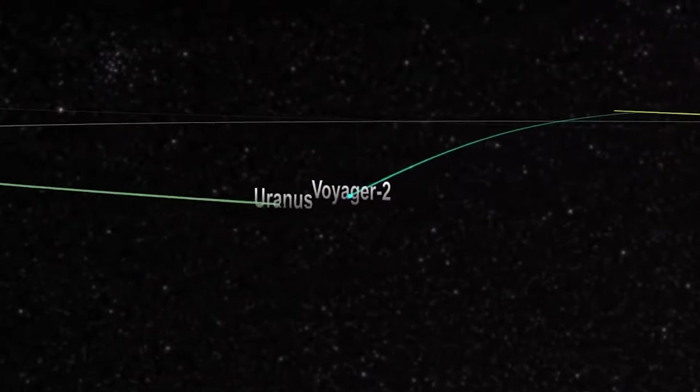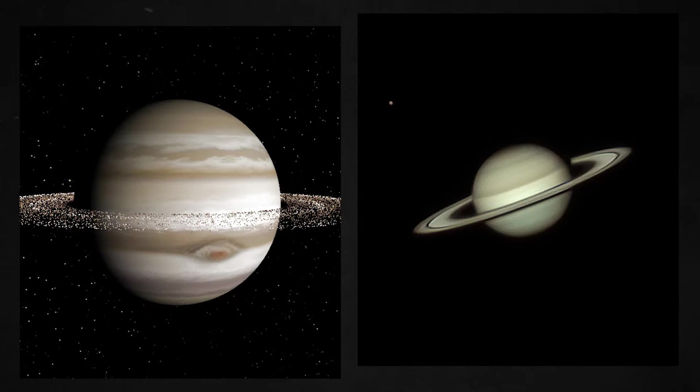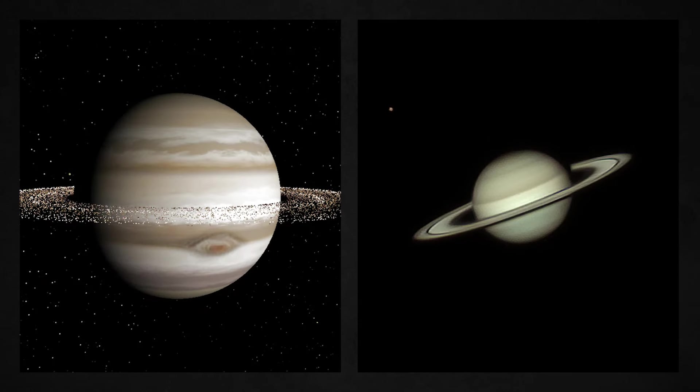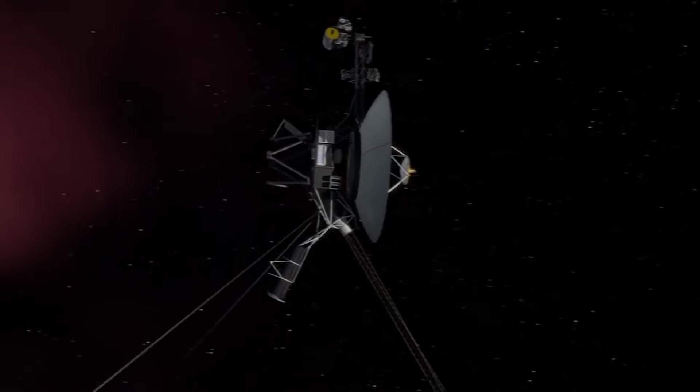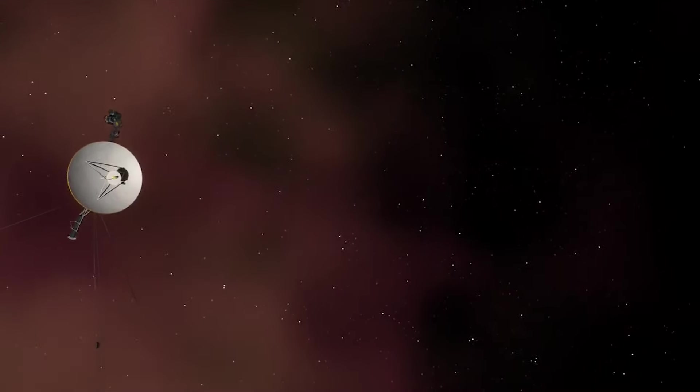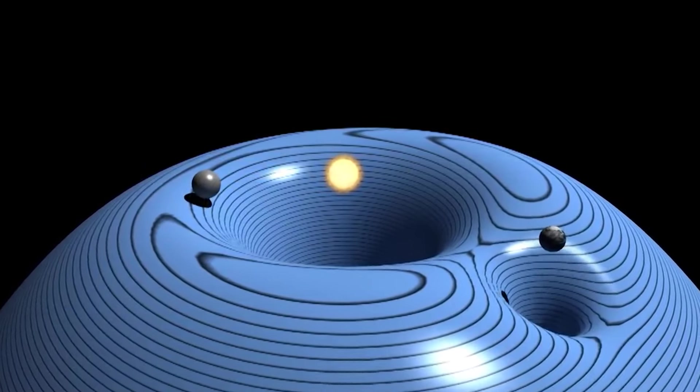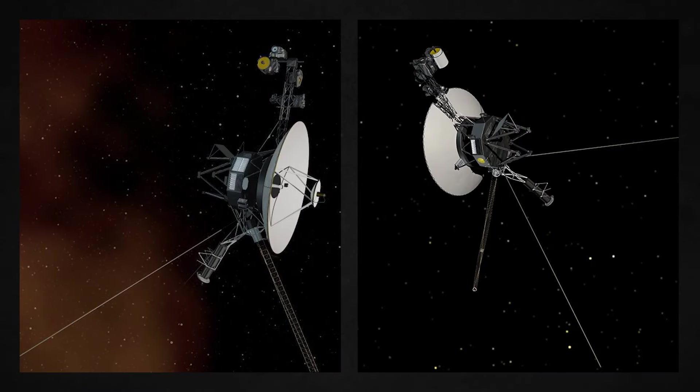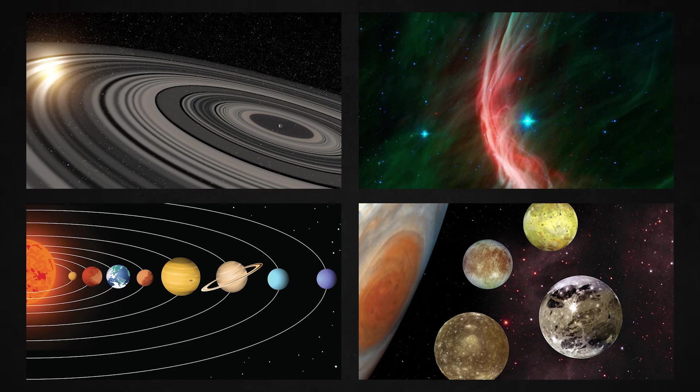The primary objective of the Voyager missions was to conduct close-up investigations of Jupiter and Saturn and their moons, rings, and magnetic fields. Voyager 2's trajectory allowed it to continue to Uranus and Neptune, providing the first and only visits to these planets to date. Both spacecraft also carried a suite of scientific instruments including cameras, spectrometers, magnetometers, and particle detectors designed to study various aspects of the planets, moons, rings, and interstellar space.